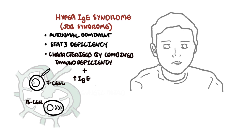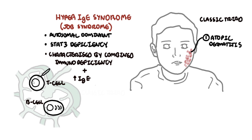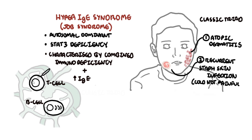Hyper immunoglobulin E syndrome results in a classic triad: atopic dermatitis, recurrent staph infections (which don't have to be painful), and recurrent pulmonary bacterial infections. Other features of Job syndrome include mucocutaneous candidiasis.